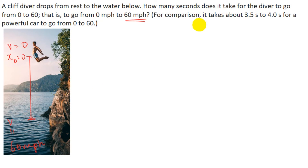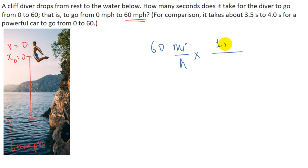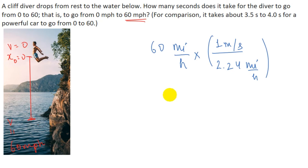First we convert the velocity into meters per second. We have 60 miles per hour, and since 1 meter per second equals 2.24 miles per hour, this comes out to 26.8 meters per second. This is the final velocity.